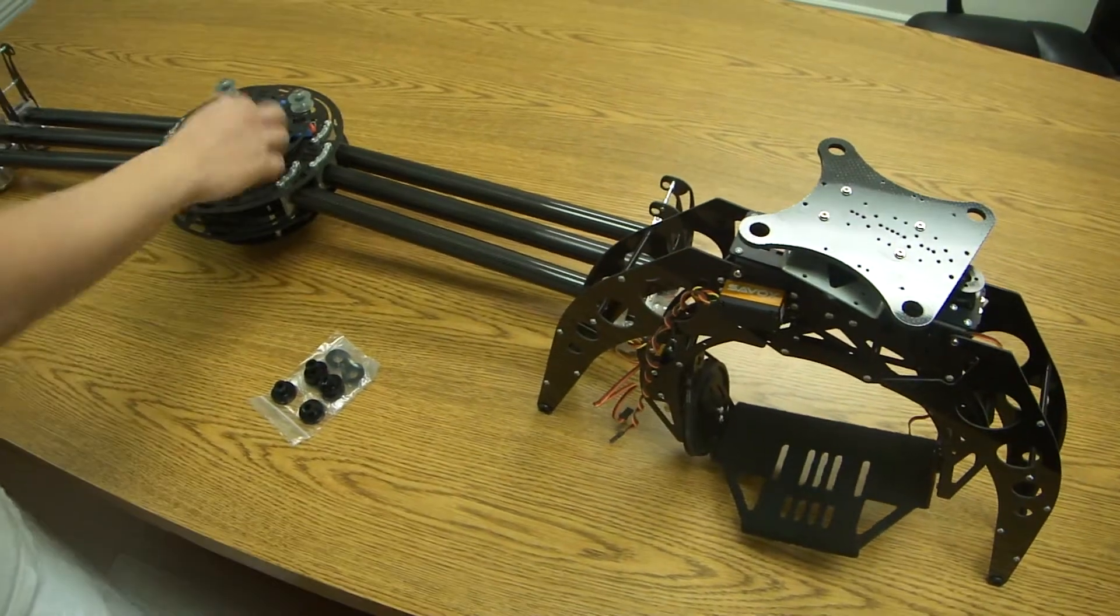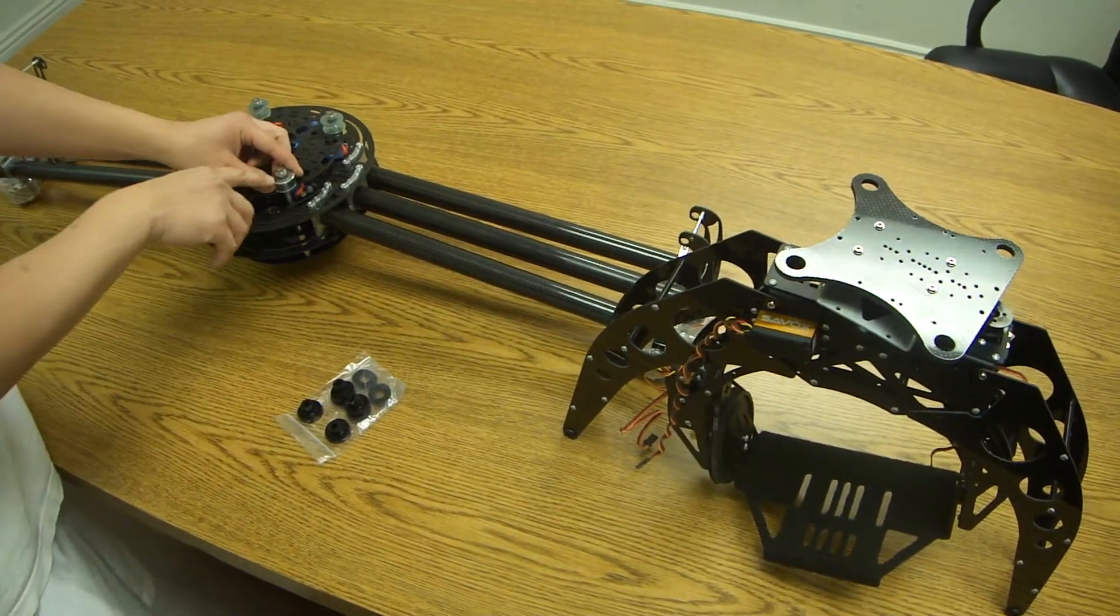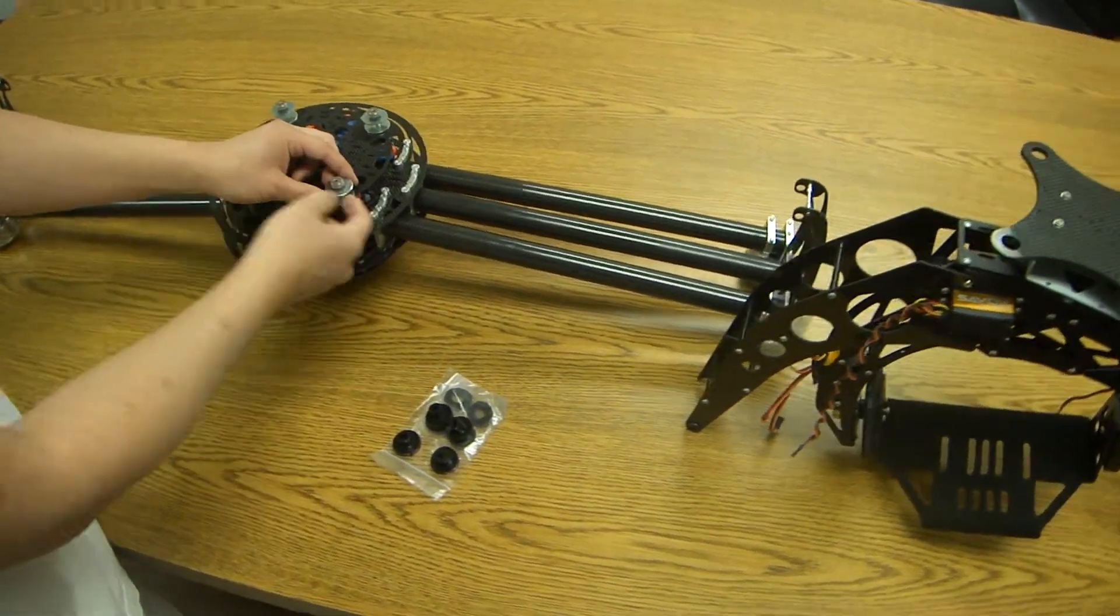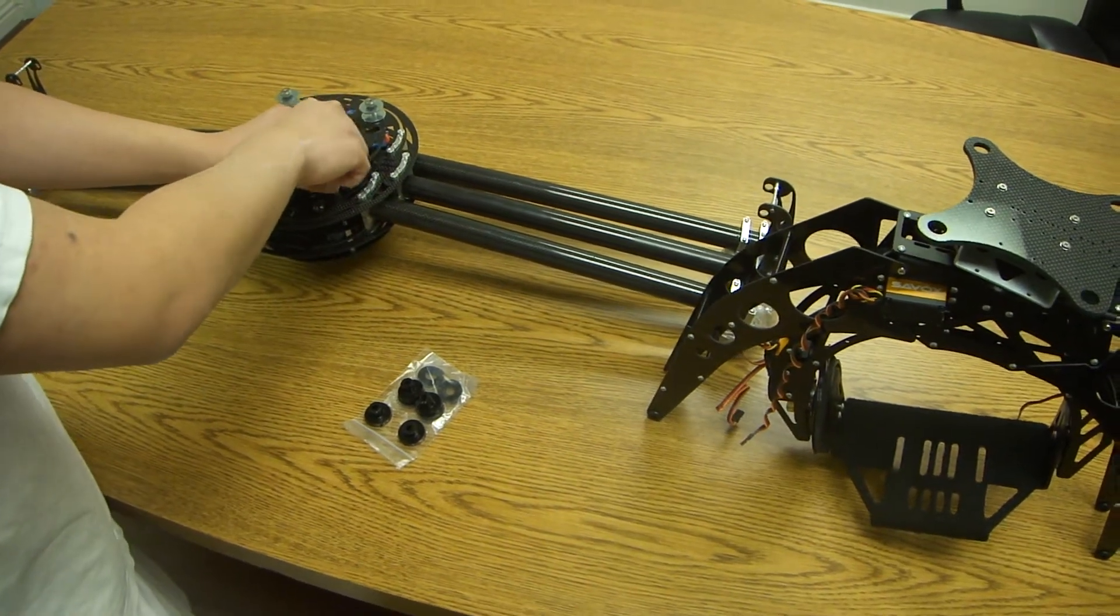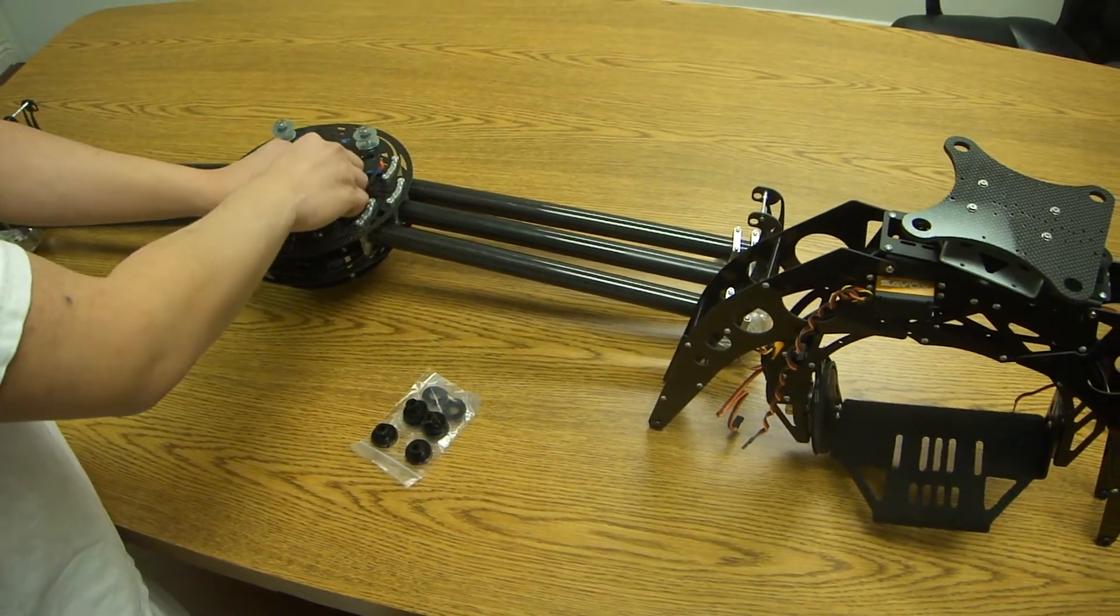Now, you can see that there's going to be thumb screws and washers. You want to be careful because there's actually washers in between the thumb screw and this metal washer. So when you unscrew it, make sure you turn it together and hold it up.